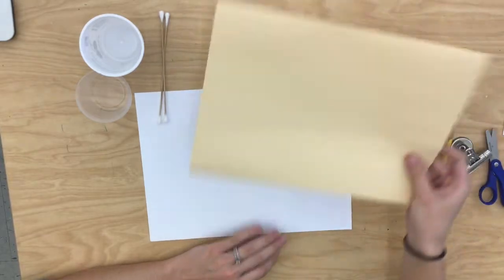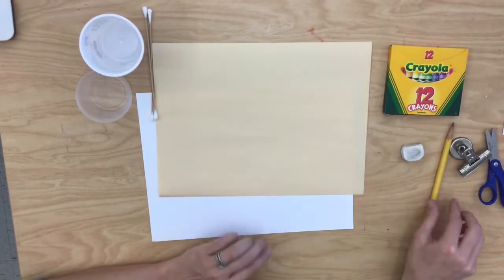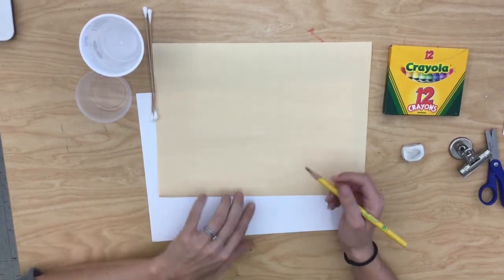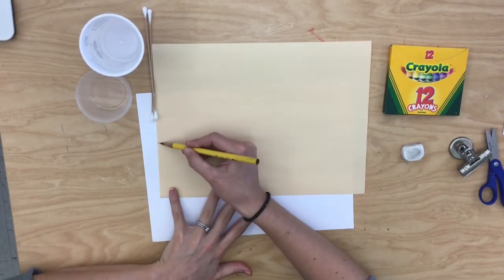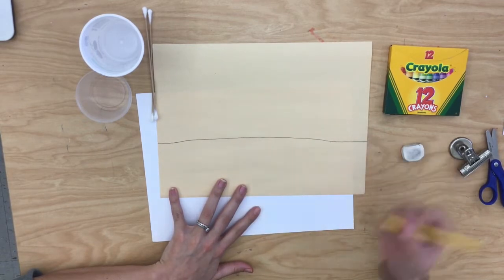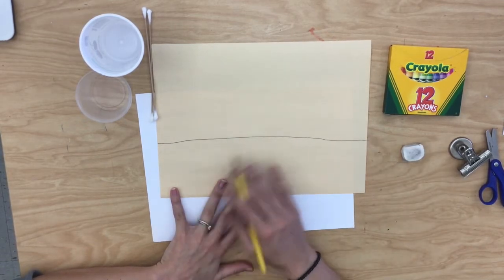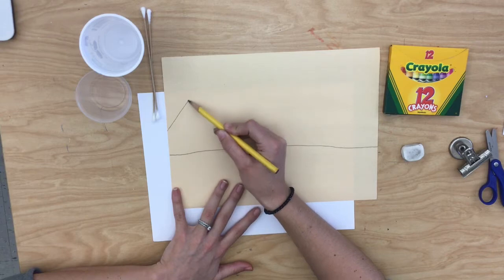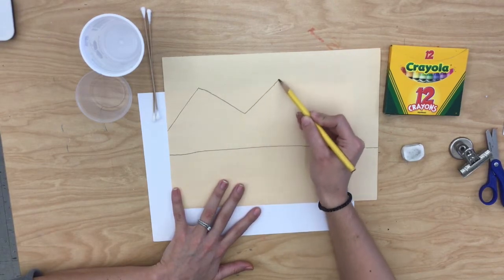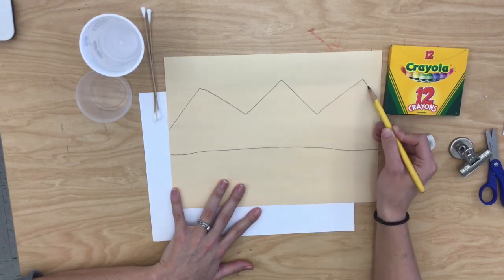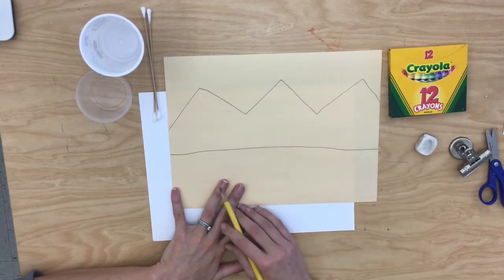To get started, what you're going to do is, on your tan paper, we're going to practice two types of lines. We're going to practice a horizontal line, which is a straight line across your paper like this. And we're also going to practice a zigzag line. Our zigzag line is going to be the mountains of our cave artwork. So you want to have gently sloped mountains like that.